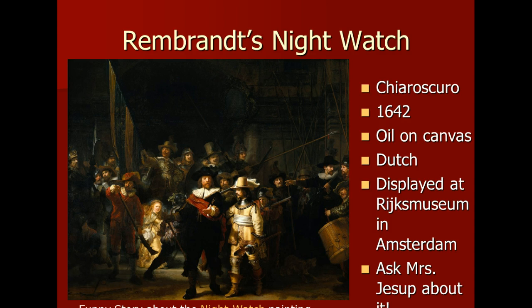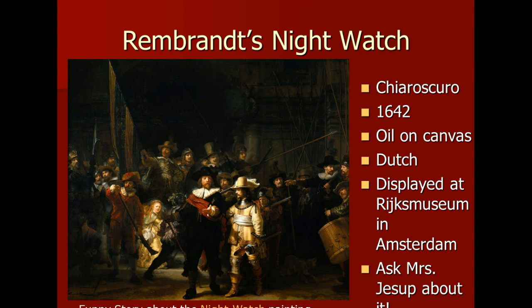Rembrandt's Night Watch is an awesome painting, and they like to use it a lot on the AP Euro test. The copy in the back of the room just really doesn't do this justice. You can really start to see more of the building behind these people. If you look towards the right and in the back, you've got a building with a crest on the side. This is up in the north — it's actually still displayed in Amsterdam, that's its hometown. This is done by Rembrandt. Next time you're in the toothpaste aisle, see if you can find Rembrandt's name. It's done in 1642, oil on canvas, and it is Dutch.